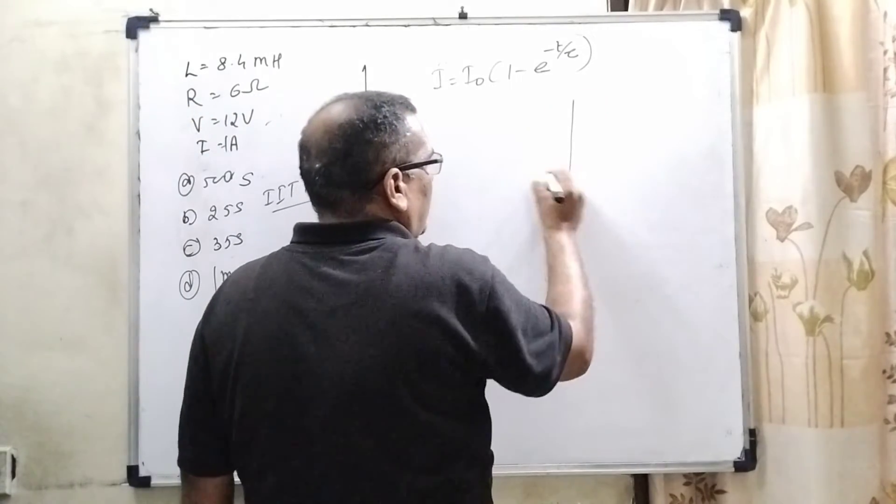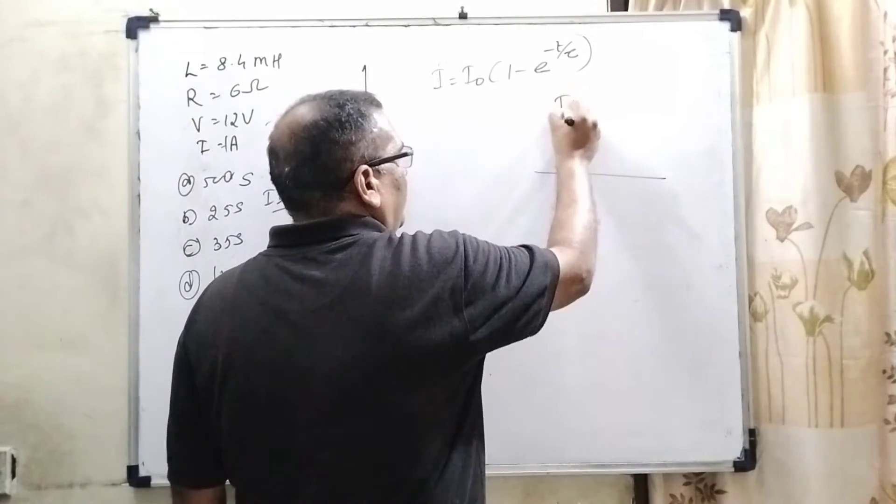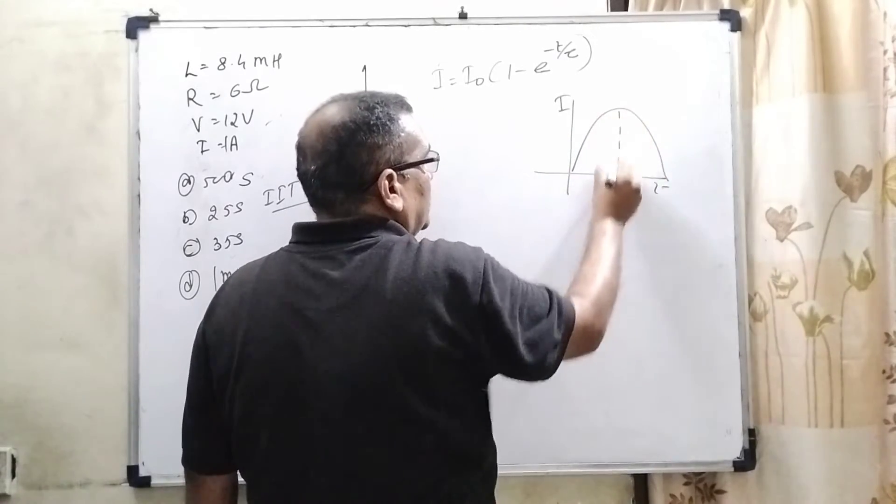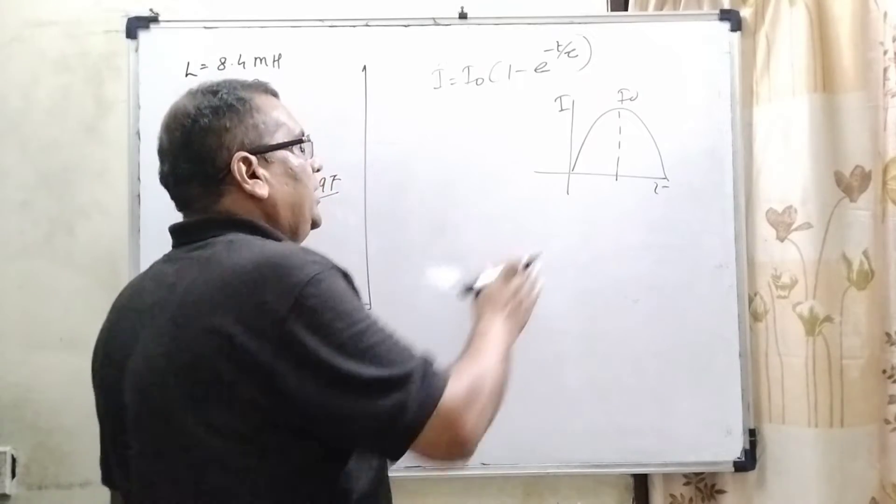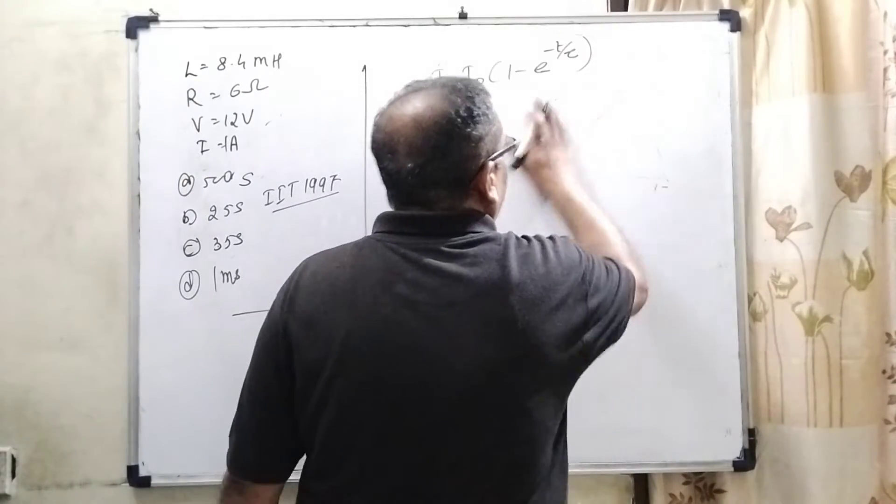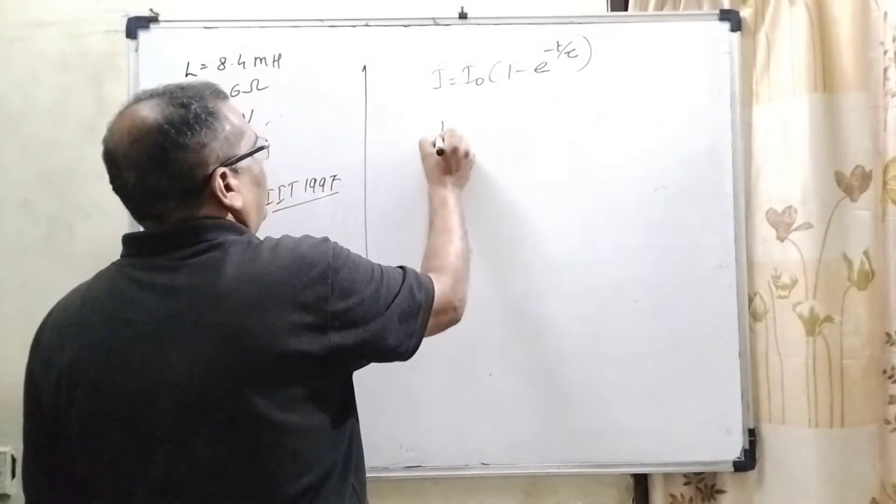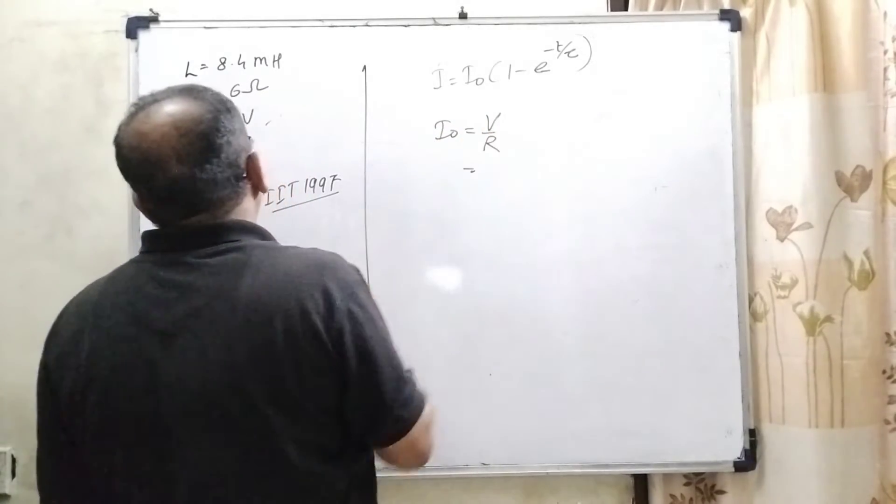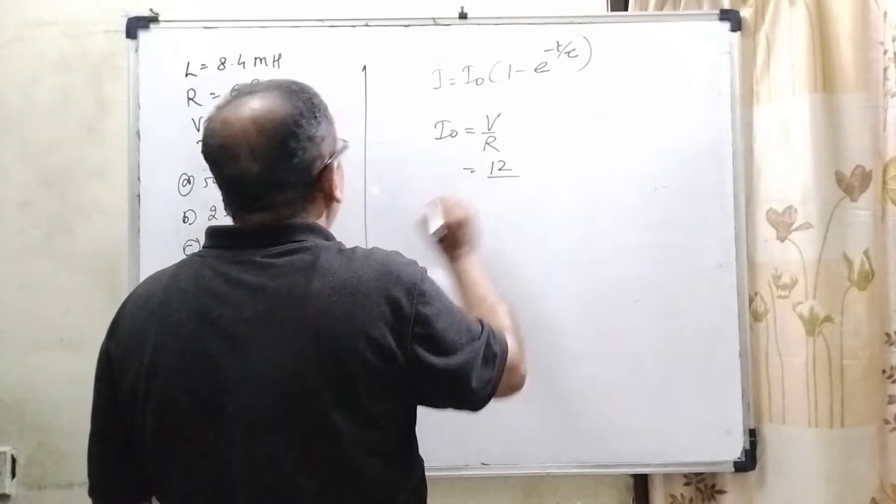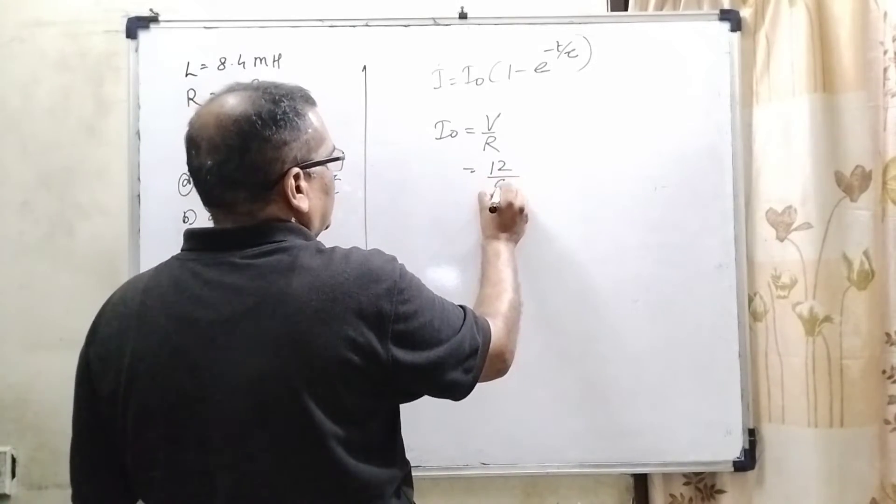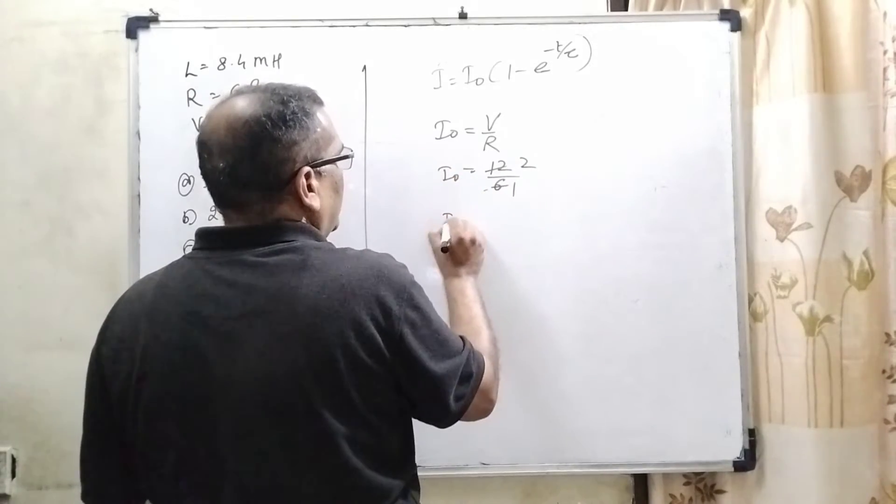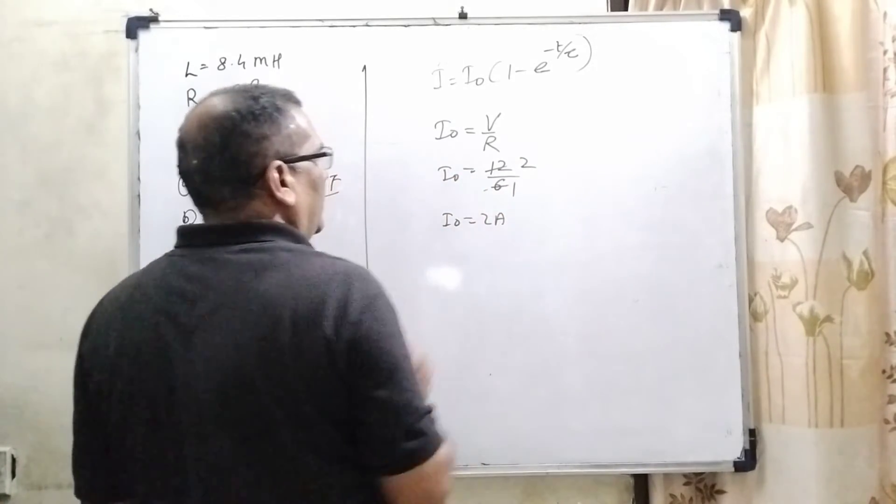And you are very well known that when we plot graph between current and time, the maximum crest shows the peak value. So here, the peak value, if there is no losses, we use I0 equal to V by R. Here, potential given is 12 volt and resistance is 6 ohm. So, 12 divided by 6, then I0 equal to 2 ampere.